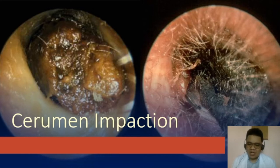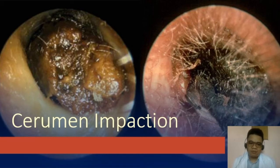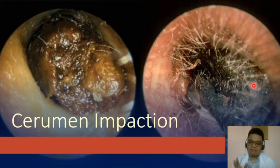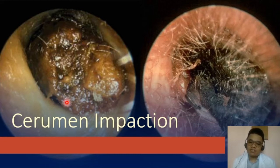Let's talk about the first disease, which is cerumen impaction or impacted cerumen. In the background is an example of an impacted cerumen — these are actually severe cases already in which it was not managed initially. Imagine, this is how your impacted cerumen would look like if not managed promptly.